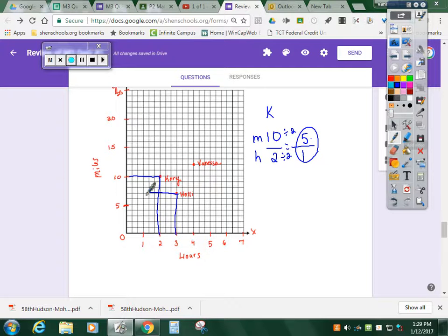Now I'm going to go to Holly. Seven miles she can do in three hours. I'm going to scale that down to one hour, so I'm going to divide by three.